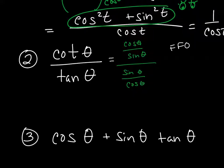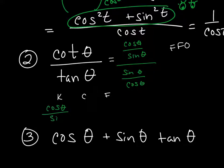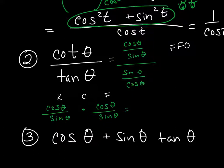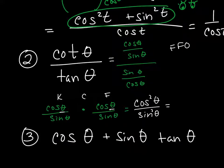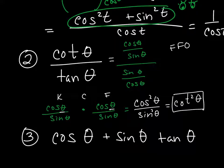I'm going to change this from a complex fraction into division of fractions using keep, change, and flip. The first fraction stays the same: cosine of theta over sine of theta. Change the division sign to multiplication, then flip — so that becomes cosine of theta over sine of theta times cosine of theta over sine of theta, which equals cosine squared of theta over sine squared of theta. That simplifies down to cotangent squared of theta, reduced to one trig term.